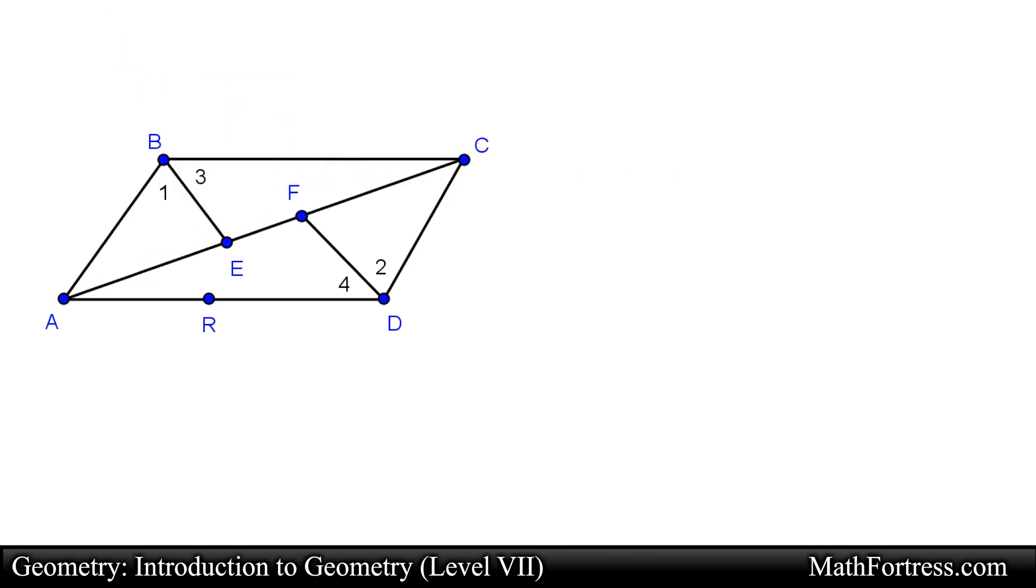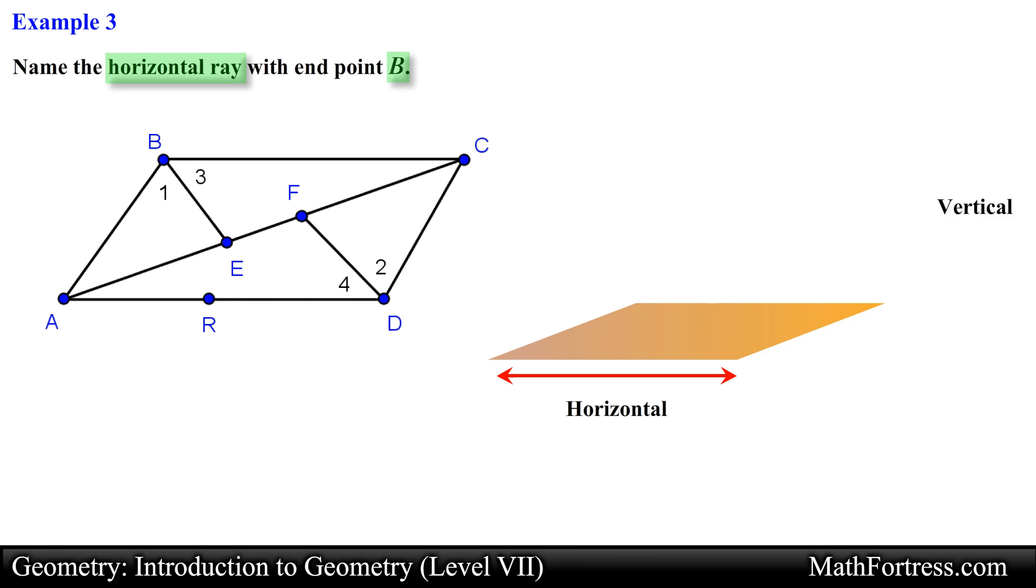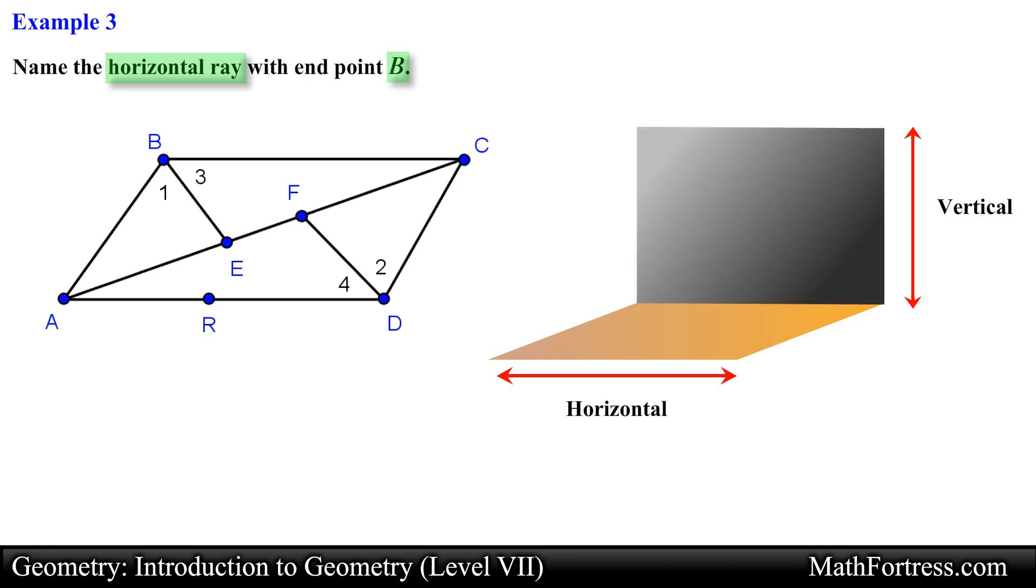Let's move along to the third example. Name the horizontal ray with endpoint B. Here they are asking us to identify a horizontal ray that has B as its endpoint. It is very common for students to confuse a line that is horizontal and a line that is vertical. A horizontal line can be thought as a flat or leveled line and extends to the left and to the right. You can think of the floor that you walk on as a horizontal surface. A vertical line can be thought as being upright, it extends down and up.